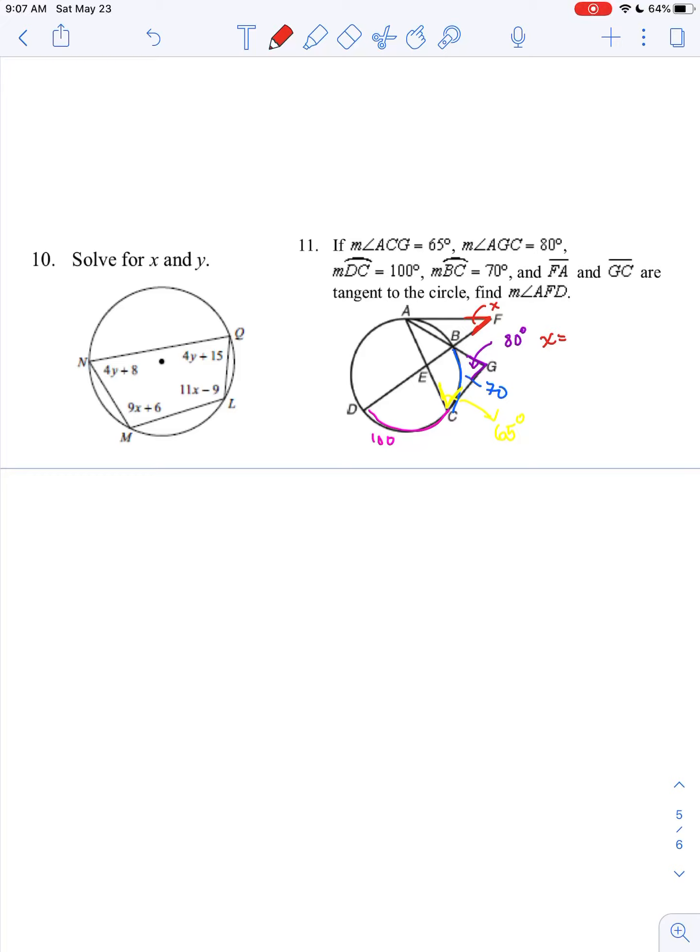So I went ahead and marked in color all the different things that were assigned or given to us in the problem, where x in red is what is asked of us. If you look at x, x is the intersection between AF, which is a tangent, and then DF, which is a secant.